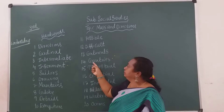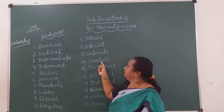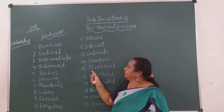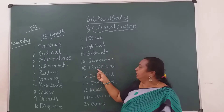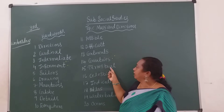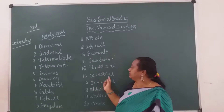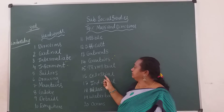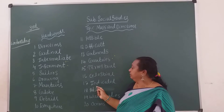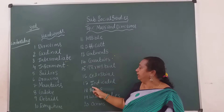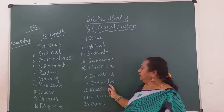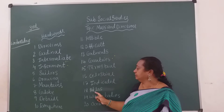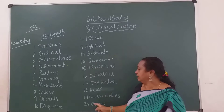Fourteenth one: countries. C-O-U-N-T-R-I-E-S, countries. Fifteenth one: terrestrial. T-E-R-R-E-S-T-R-I-A-L. Sixteenth one: celestial. C-E-L-E-S-T-I-A-L. Seventeenth one: indicated. I-N-D-I-C-A-T-E-D, indicated. Eighteenth one: atlas. A-T-L-A-S, atlas.